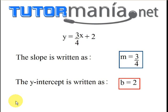The slope is written as m equals 3 fourths, and the y intercept is written as b equals 2. Now, it's really important to understand, when you're good at making linear equations into slope-intercept form, you'll be able to identify the slope easier, the y intercept easier, and you'll be able to graph the line easier.